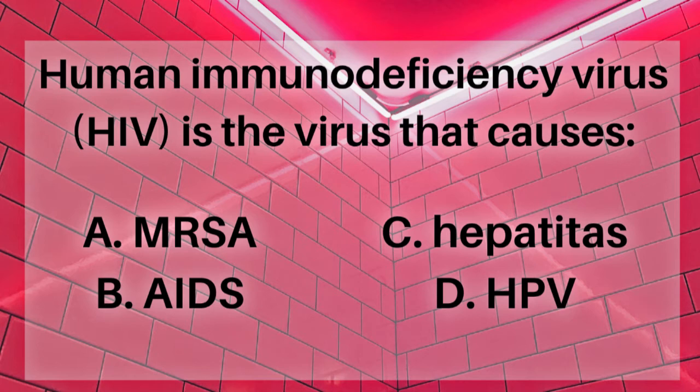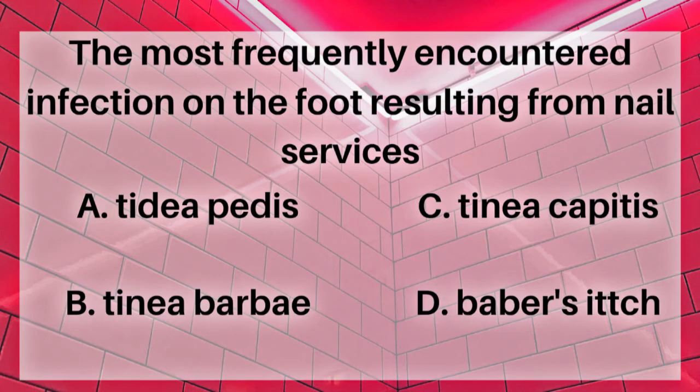Human immunodeficiency virus, HIV, is the virus that causes: A. MRSA, B. AIDS, C. Hepatitis, or D. HPV. The answer is B. AIDS. Remember HIV and AIDS run hand in hand.